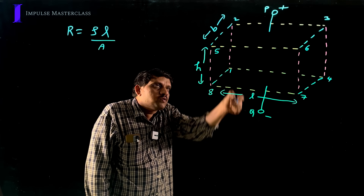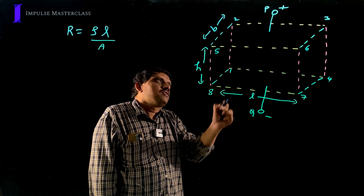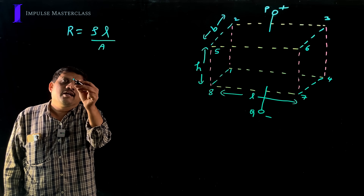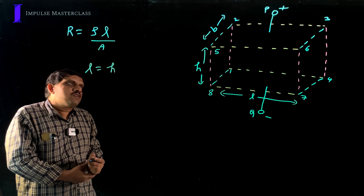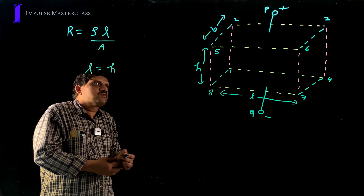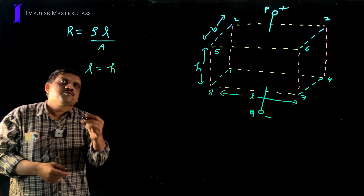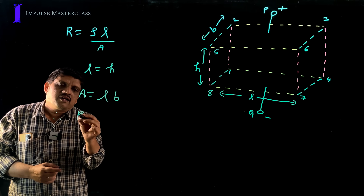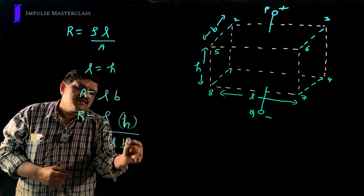So in the direction P to Q, we measure the length. The area perpendicular to the current flow is the face area 2365 or face 1478, which equals L times B. Therefore, the resistance is R = ρH/(L×B), where H is the length along P to Q and L×B is the cross-sectional area.